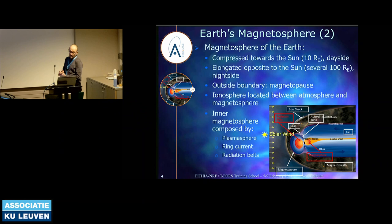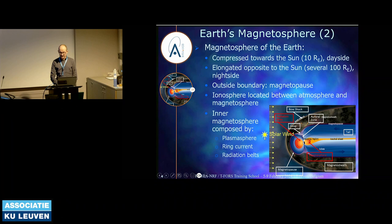The magnetosphere of the Earth is compressed towards the sun, up to about 10 Earth radii. We call this the day side because it's towards the sun. And it's elongated in the direction opposite to the sun, several hundred Earth radii — this is the night side. There is a sketch of this, with the solar wind on the left, the Earth very small. You have several regions including the magnetosphere and its outer boundary, the magnetopause, and the bow shock.